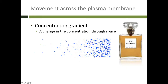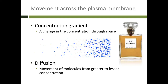These molecules are all moving around, bumping into each other and bouncing off of each other. As they move away, if they go in the direction of lower concentration, they're less likely to hit each other. If they try to go toward high concentration, they're bumping into more molecules. As you move away from an area of high concentration you find a little bit of space — we call that diffusion. Diffusion is just the movement of molecules from a greater to a lesser area of concentration.